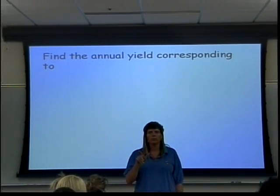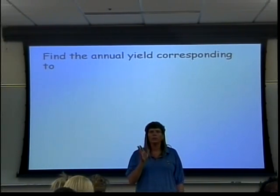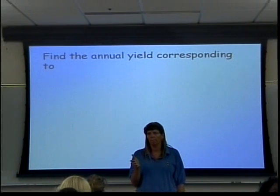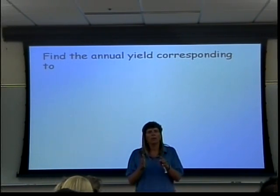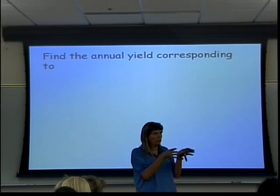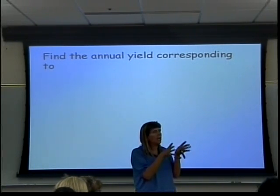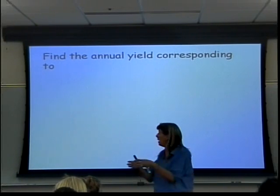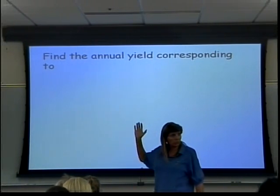All right, Daniel. What the annual yield is calculating is the following: It is calculating what simple interest would, in one year, produce the same amount of money and interest as the compound interest amount that you're giving.